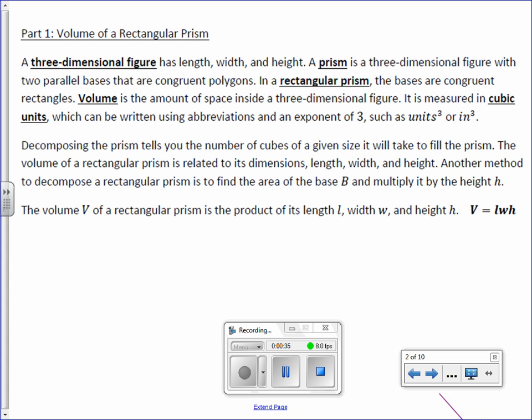Volume is the amount of space inside a three-dimensional figure. It is measured in cubic units, which can be written using abbreviations and an exponent of three, such as units cubed or cubic units or inches cubed. Decomposing the prism tells you the number of cubes of a given size it will take to fill the prism. The volume of a rectangular prism is related to its dimensions: length, width, and height.